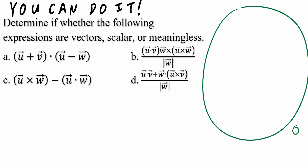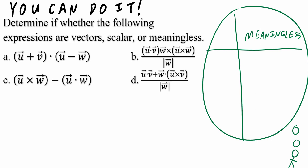You can draw or compose a table with two different columns. The second column we can call 'meaningless,' and in the first column, these are the ones which equal either a scalar outcome or a vector outcome. We're going to let S equal a scalar outcome and V be a vector outcome.